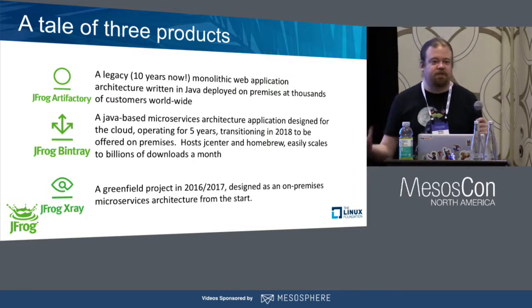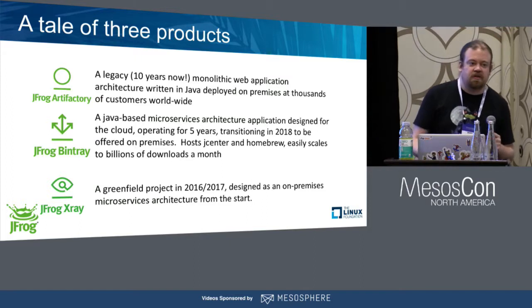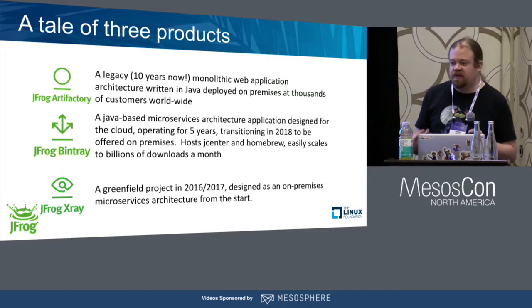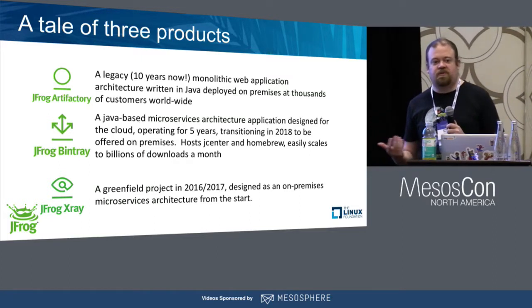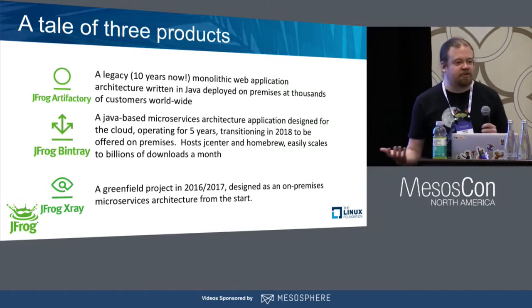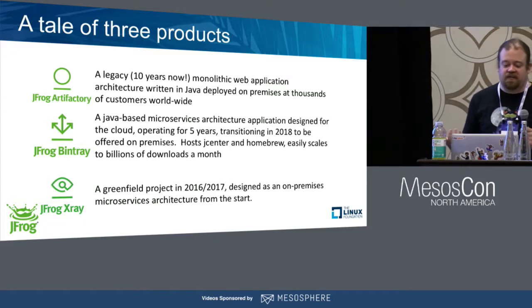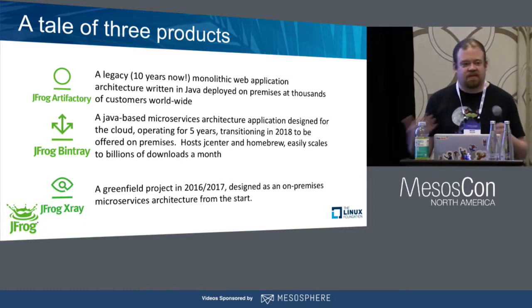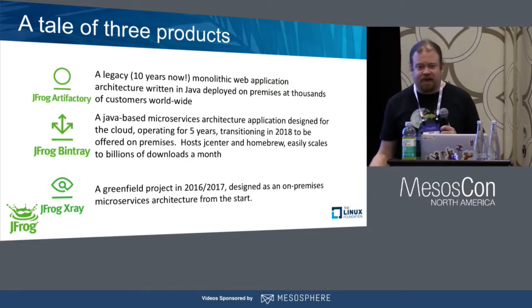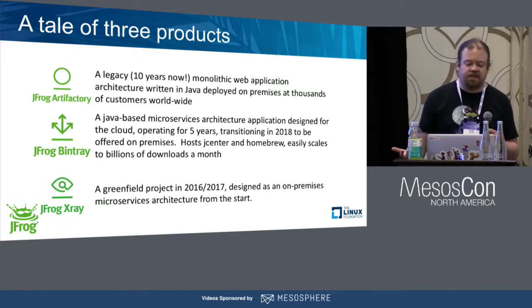We also have JFrog Bintray — a microservices SaaS application for software distribution. If you've used Jcenter doing Android or Gradle development, or if you've used Homebrew, you've leveraged downloads from JFrog Bintray — about two billion downloads a month, very scalable, very microservices-oriented. We've been operating it for about five years, and in the future we're going to want to take it on-premises.